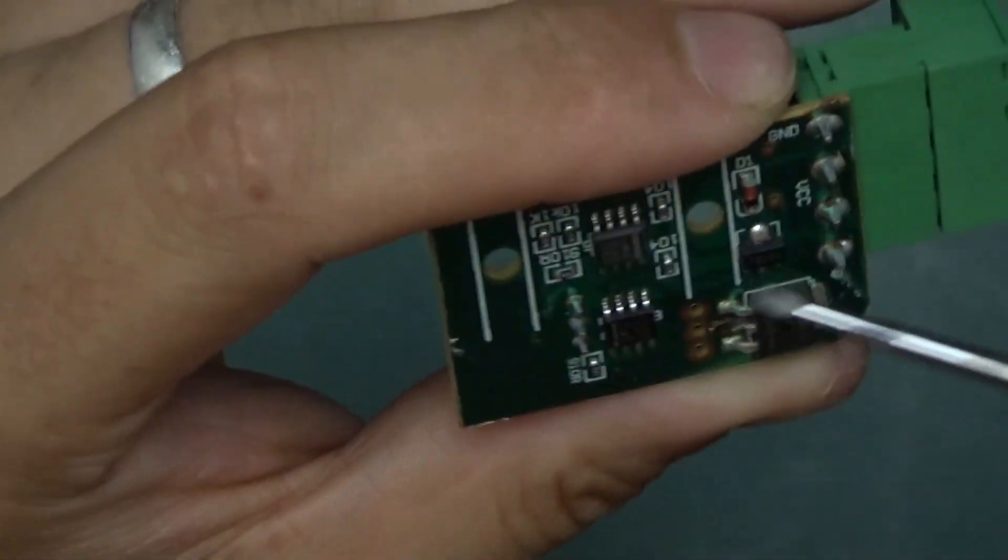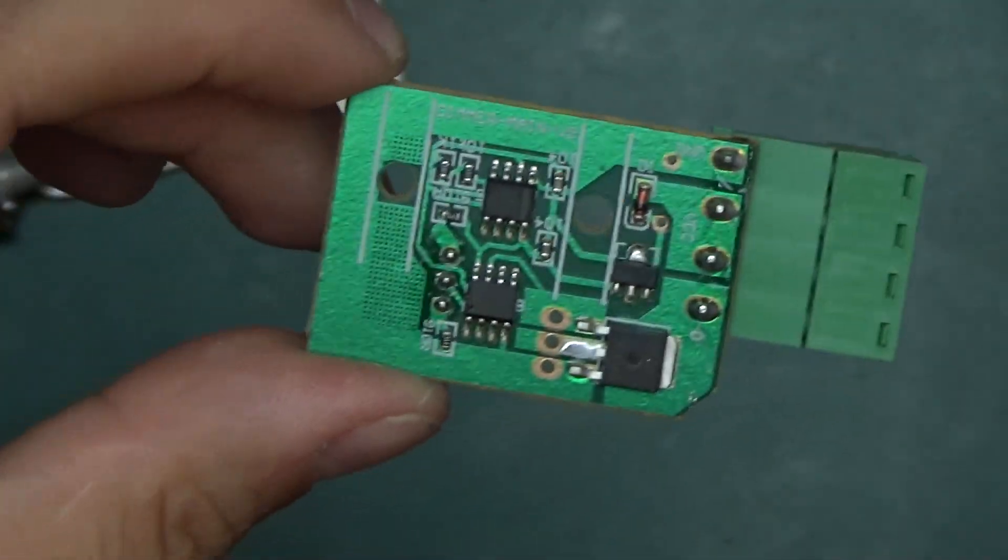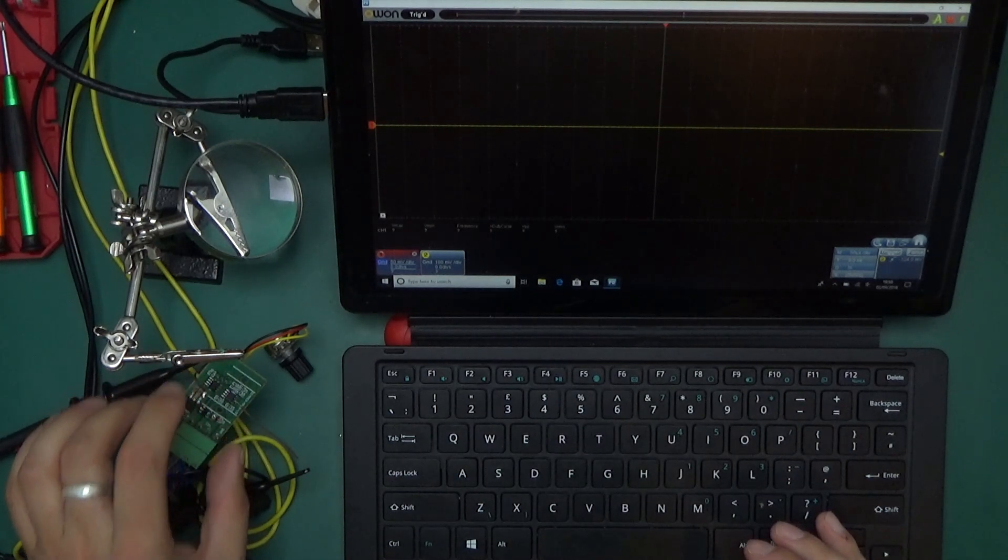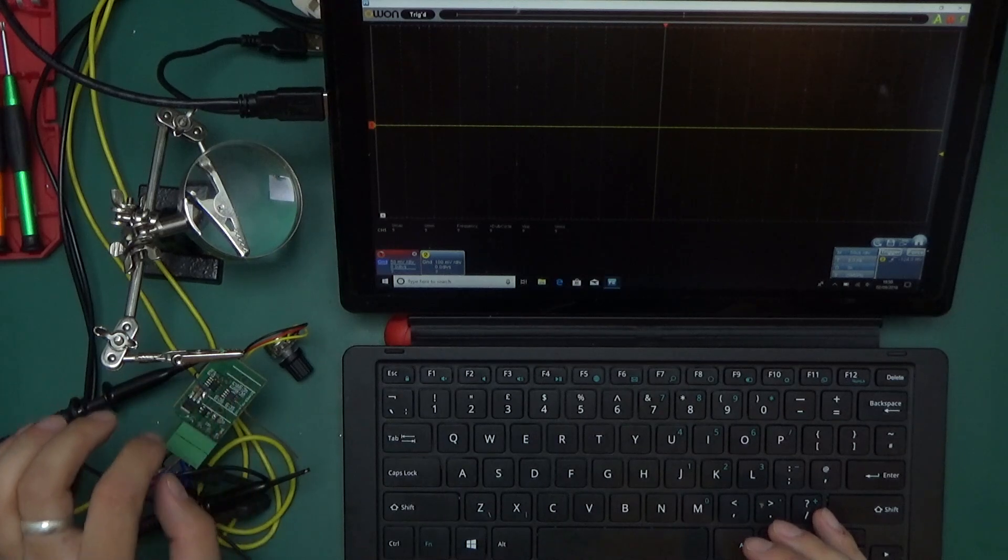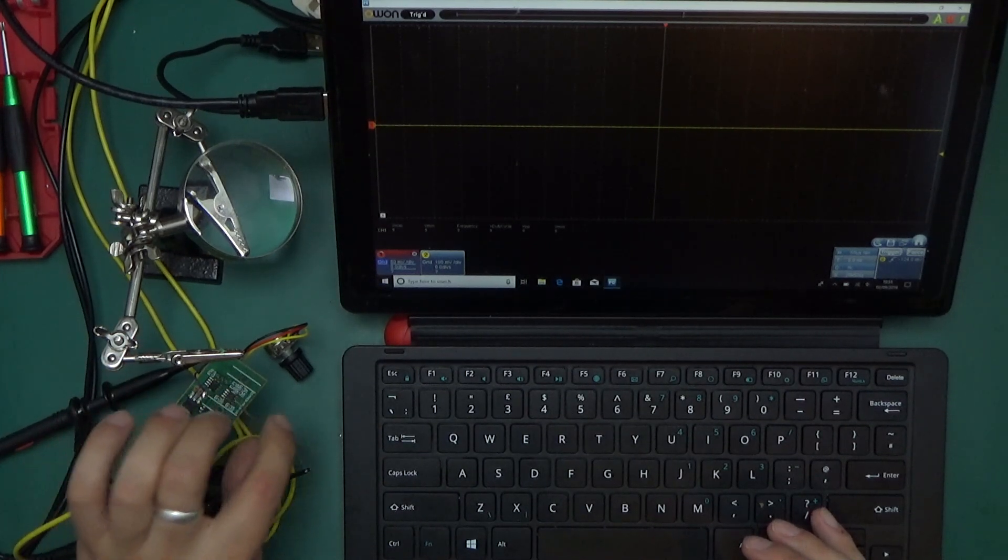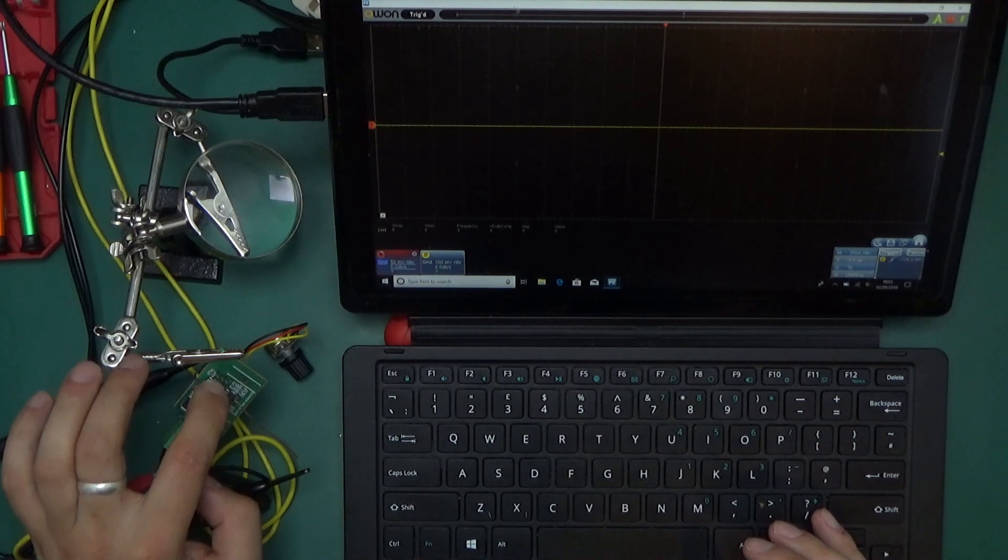We can remove that. There we go, we fixed it. Let's have a look on the scope, how this switching happens. So here is the setup that I've prepared. I've soldered two little wires, one to the gate of the MOSFET, so that's the output of the op-amp LM358. And one to the output for this purpose of the 555 timer, that goes to the non-inverting input, I believe.